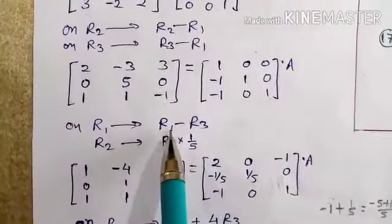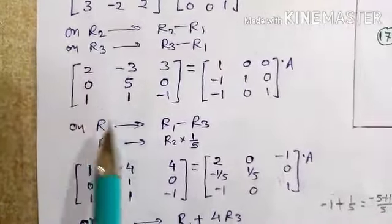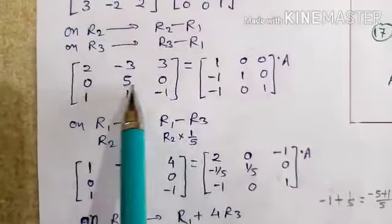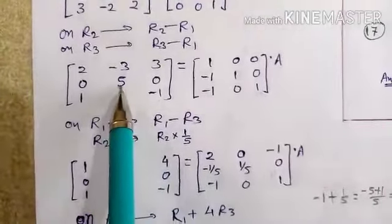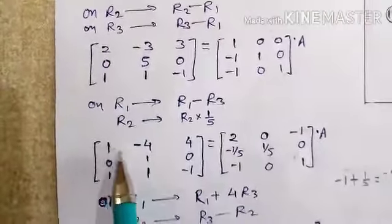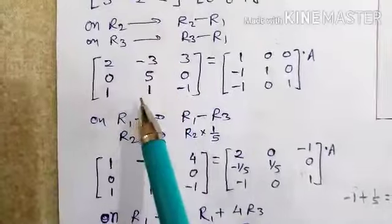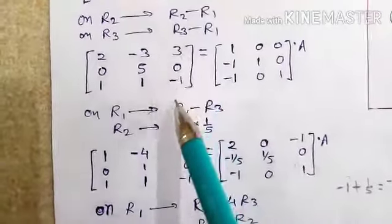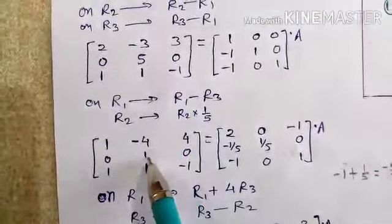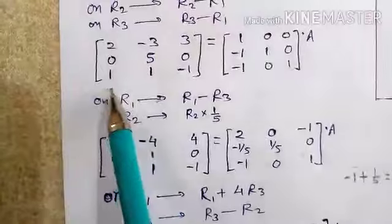Now observe the matrix again. On R1, apply R1 minus R3 — first row minus third row — so you will get 1 there. In the second row, if we multiply by one-fifth, we get 1. So R1 minus R3: 2 minus 1 is 1, minus 3 minus minus 1 gives minus 4, and 3 minus minus 1 gives plus 4. The second row divided by 5 gives 1, then 0.5 divided by 5, and 0.5 divided by 5. The third row stays as it is.